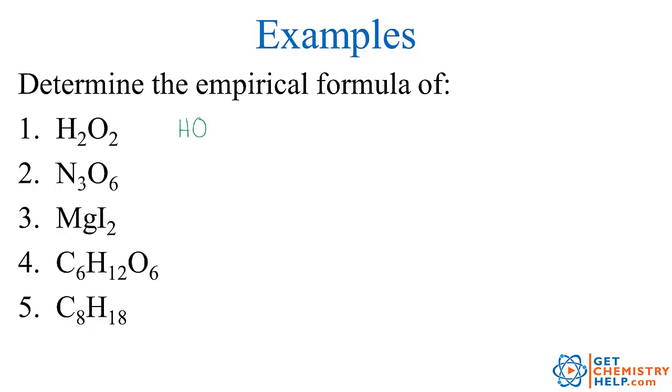How about trinitrogen hexaoxide? Well 3 to 6. If I were to divide them both by 3, I would get the simplest ratio as 1 to 2. So NO2 would be the empirical formula.